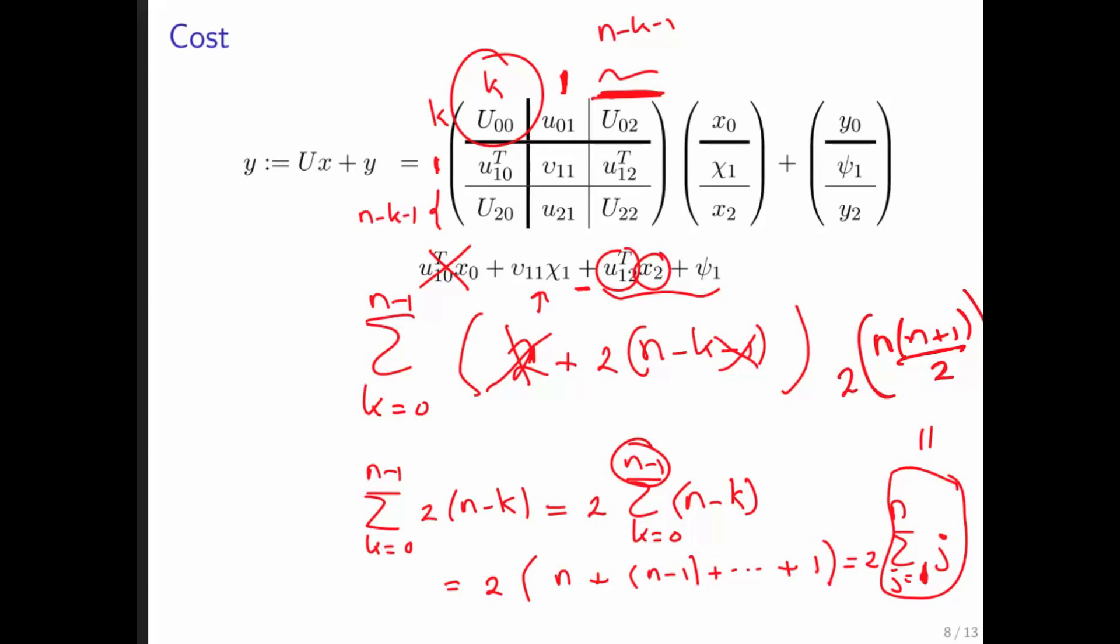What we notice is that a triangular matrix vector multiply requires N times N plus 1 floating point operations. Had we not taken advantage of the fact that this was a triangular matrix, it would have been 2 times N squared. Because the matrix would have been square, N by N. A matrix vector multiply requires 2 times N times N floating point operations. M is equal to N, so we end up with 2 times N squared.